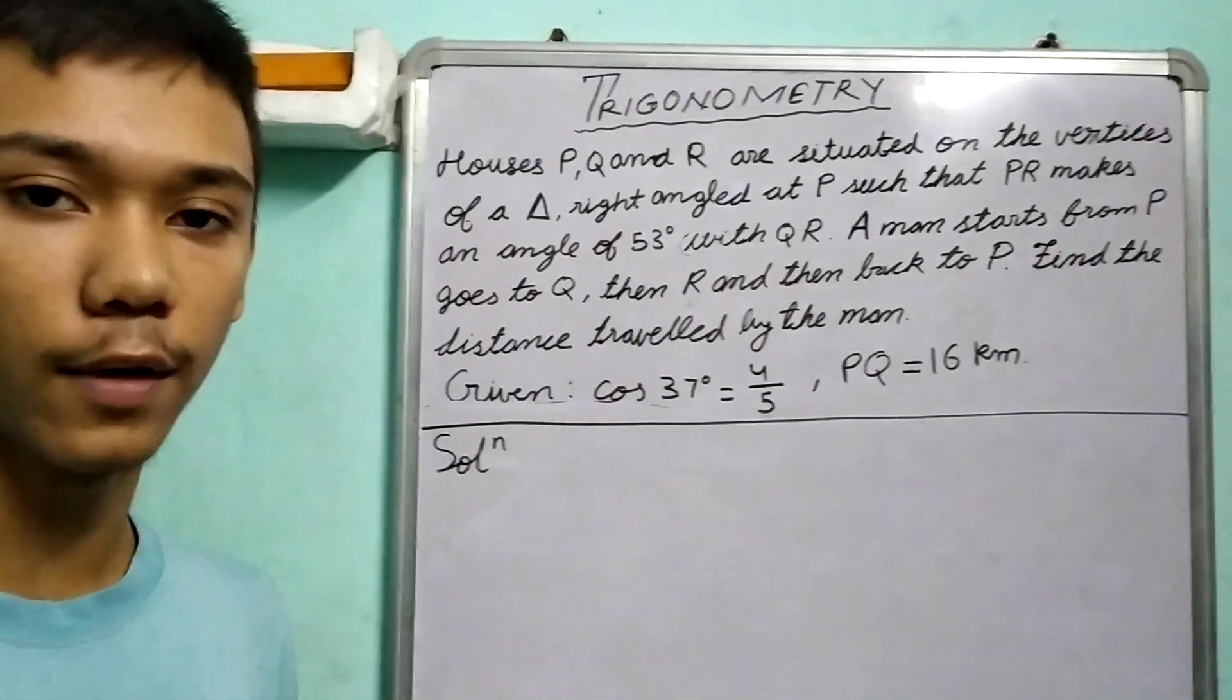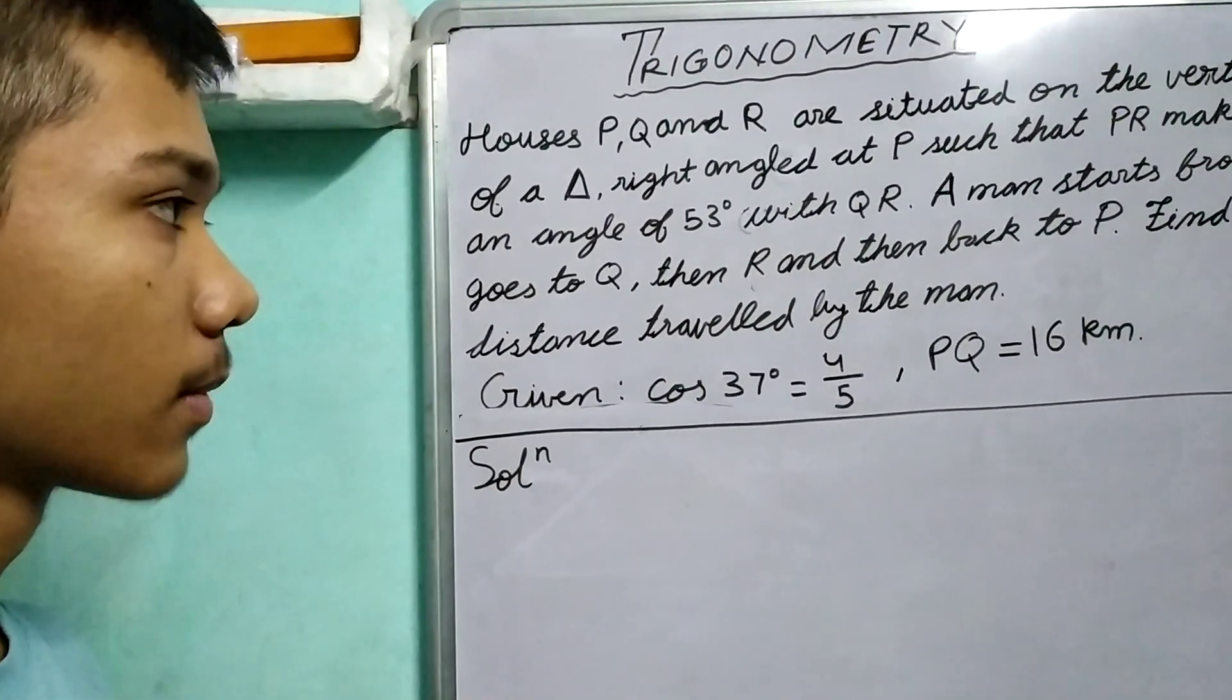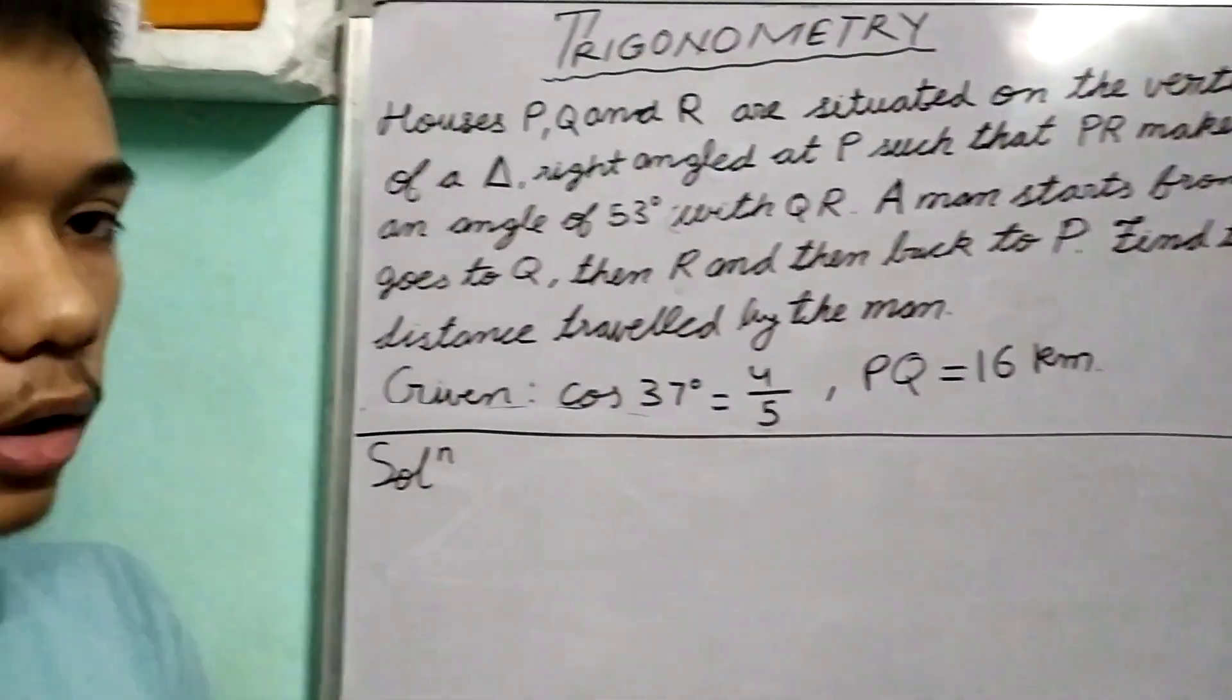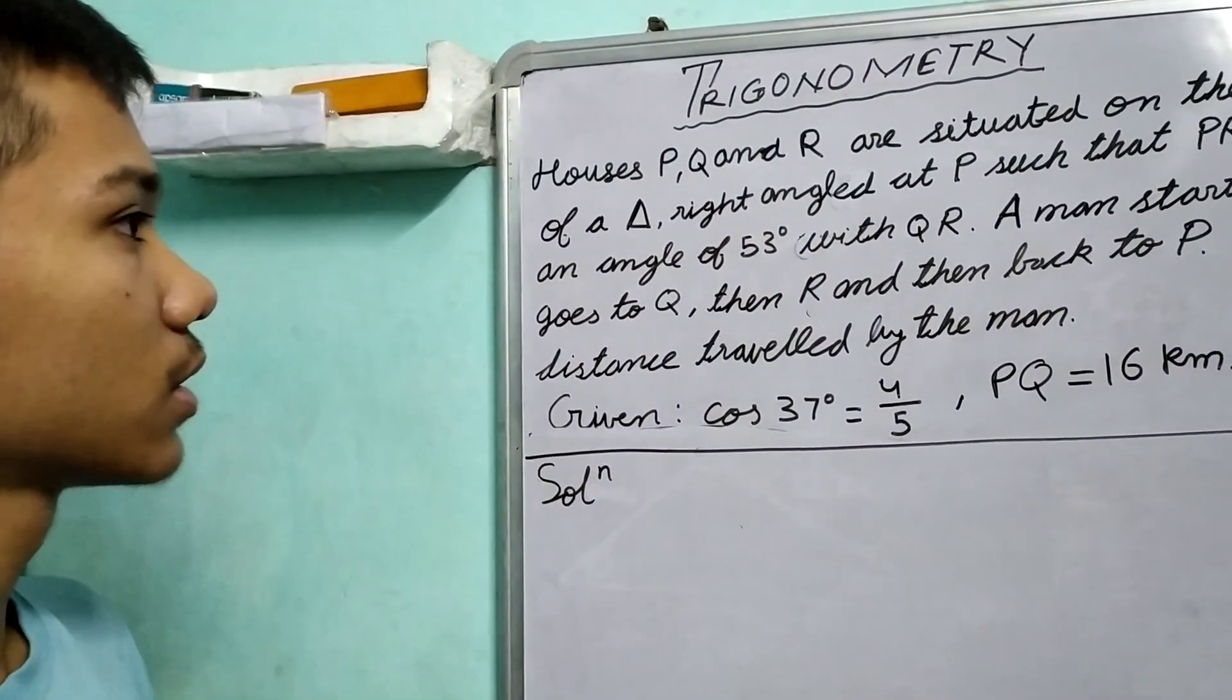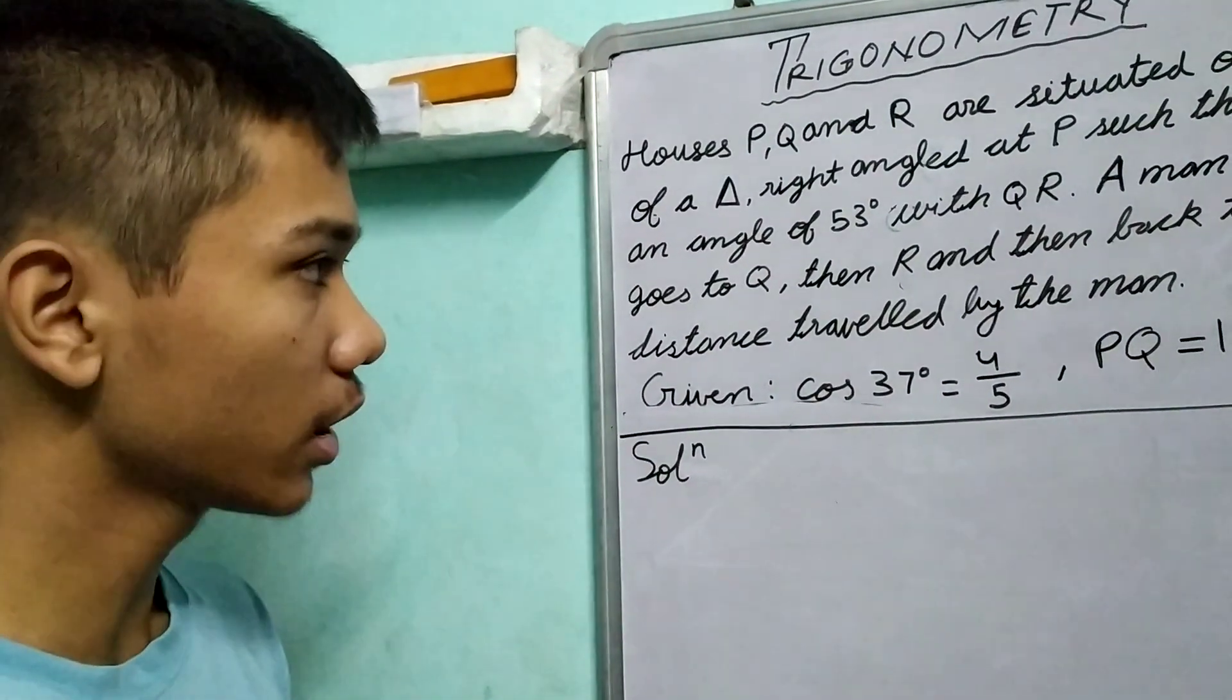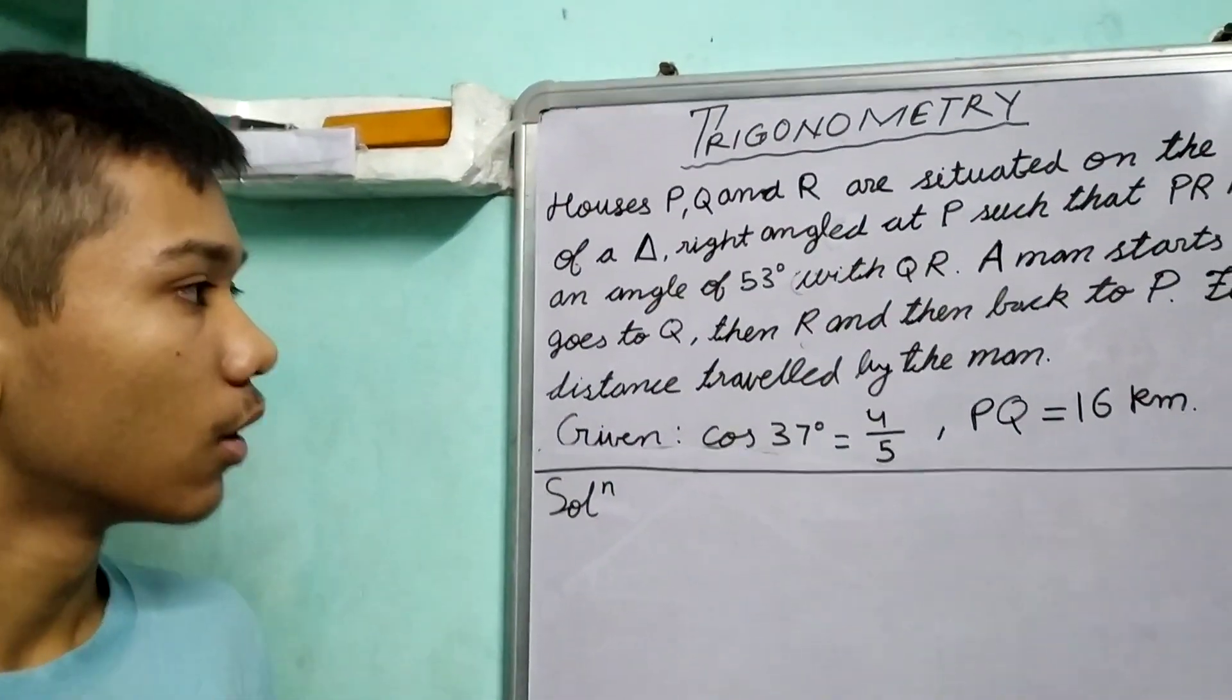Here we're given some ratios, some properties of angles, and now we need to find the sides. So the important step of this question is to draw the correct diagram. If your diagram is correct, then trust me you're halfway through the question.